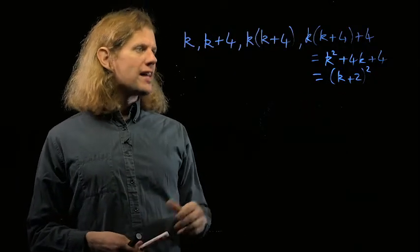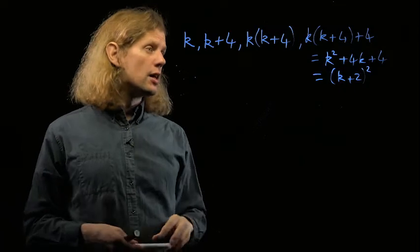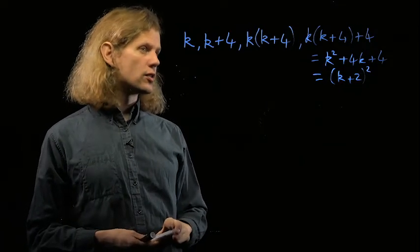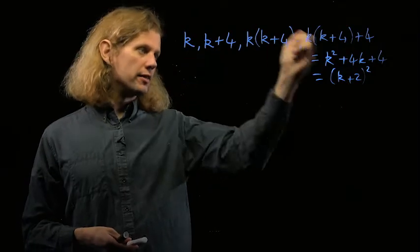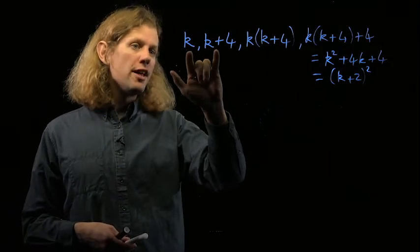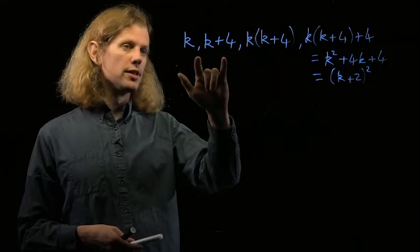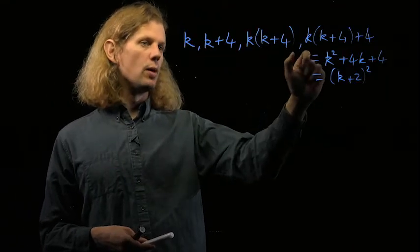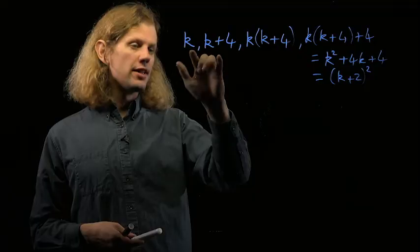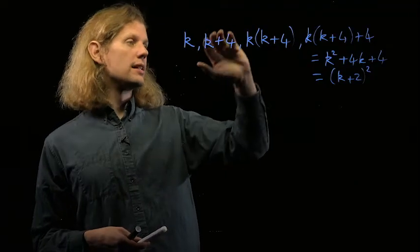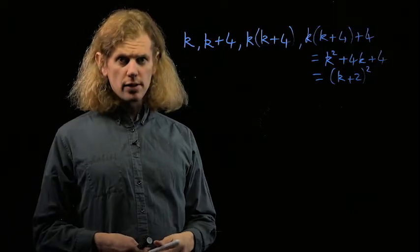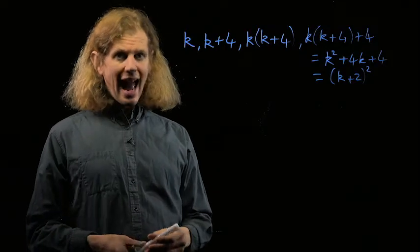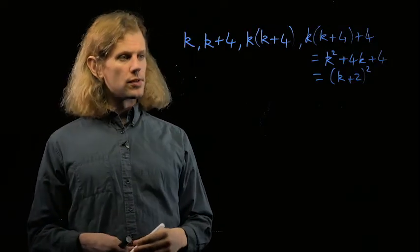And that, in fact, proves that every even term after the 6th is a square, because the 3rd and 4th terms are of this format giving that the 6th term is a square. But the 5th and 6th terms are also going to be of this format, giving the 8th term a square. And the 7th and 8th terms are going to be in this format, giving the 10th term a square, and so on. So we've proved that, starting with the 6th term, every even term of this sequence is a square.